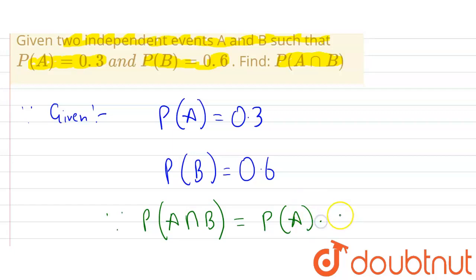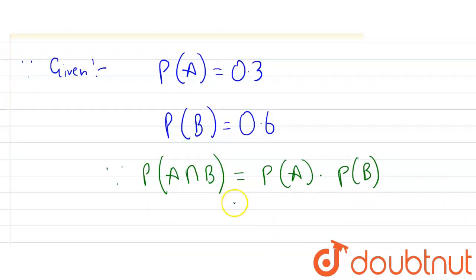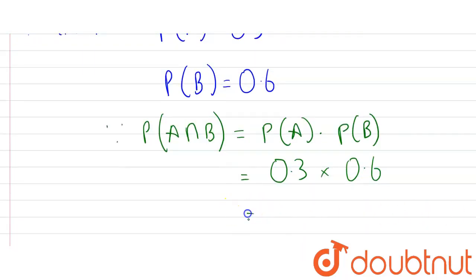Now let's put the value of this. So we know P(A) is equals to how much? 0.3 into, and P(B) is how much? It is given that 0.6. Now if you multiply both of them we will be getting 0.18.